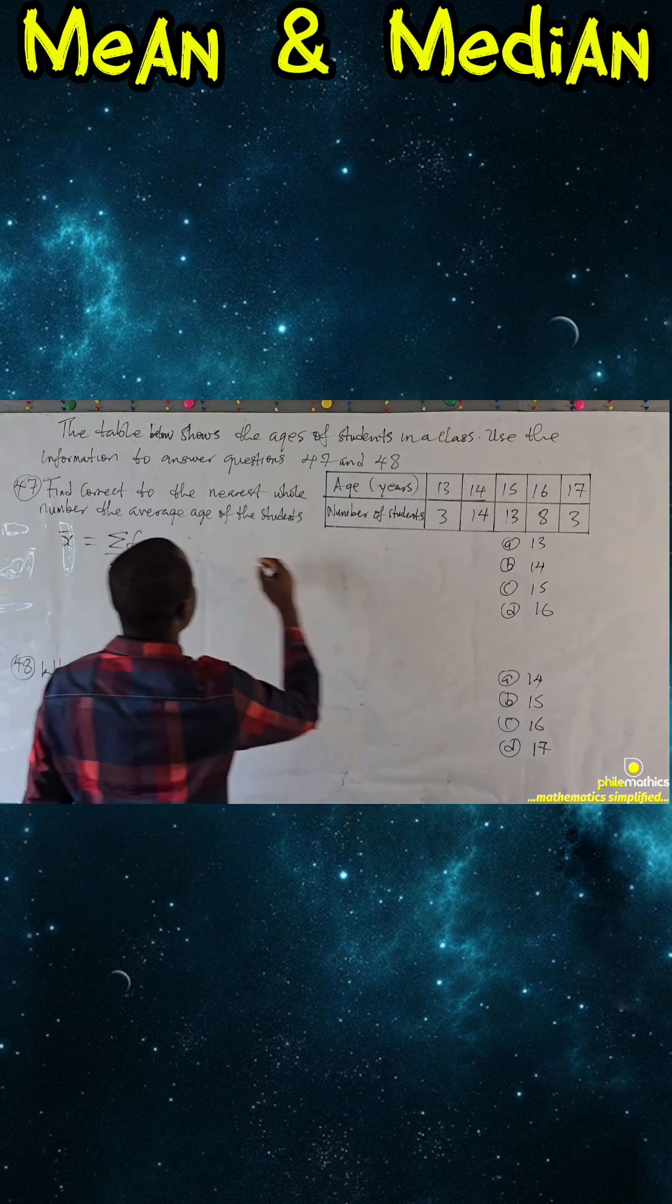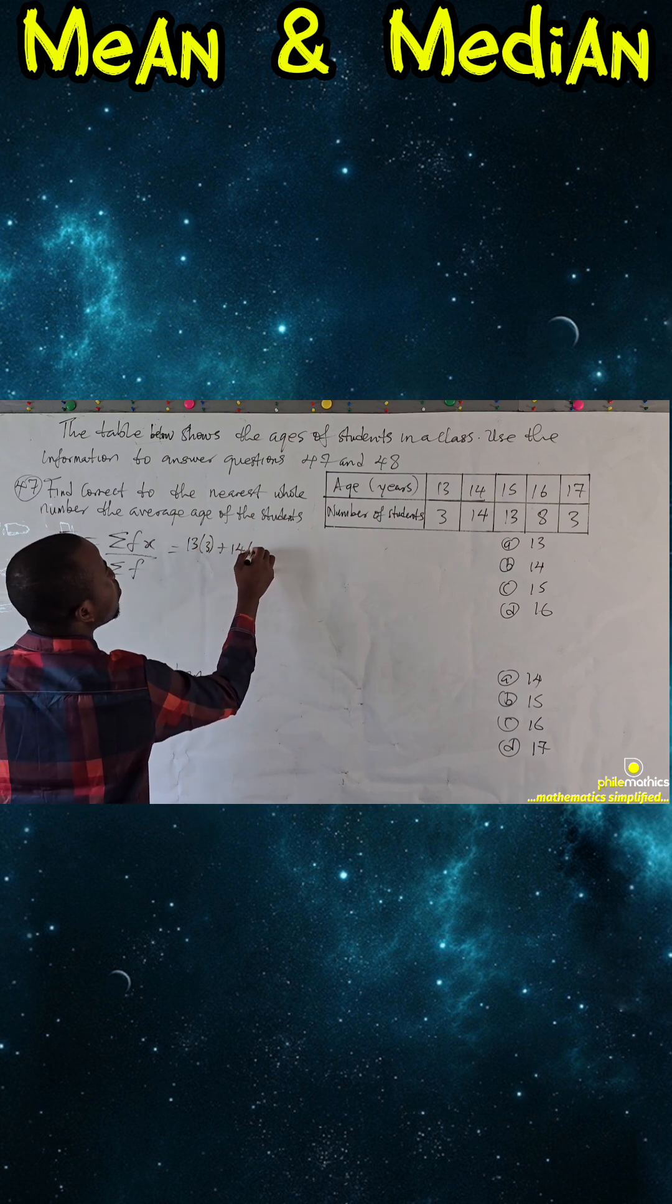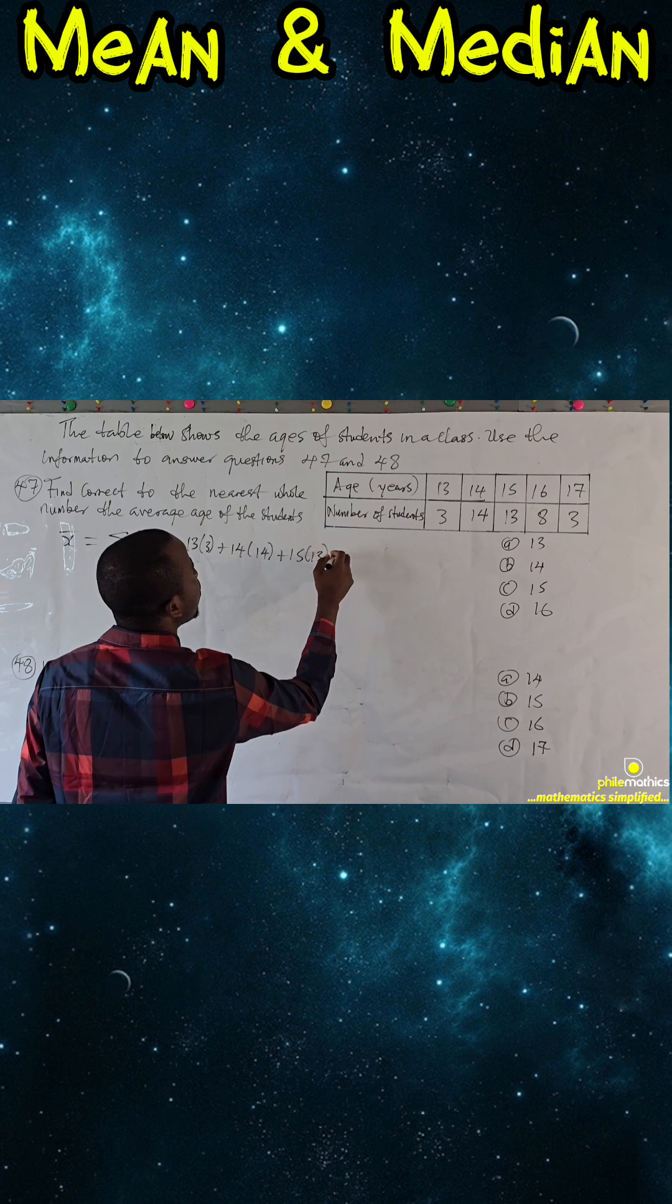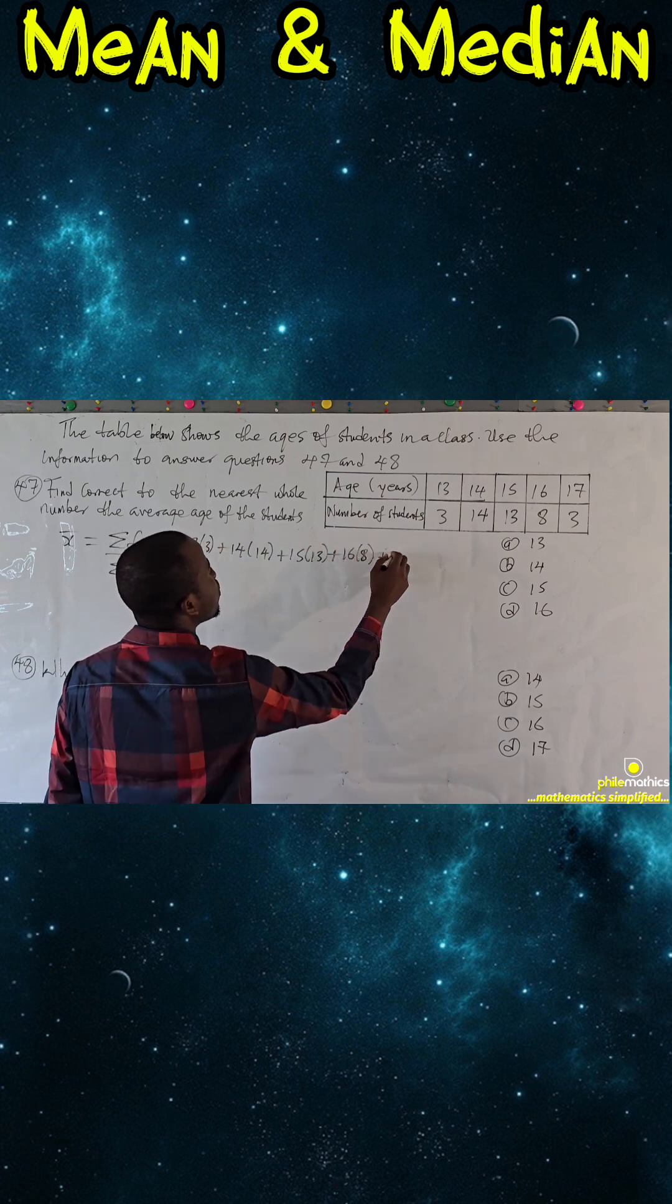13 multiply 3, plus 14 multiply 14, plus 15 multiply 13, plus 16 multiply 8, plus 17 multiply 3, everything over the summation of frequency.